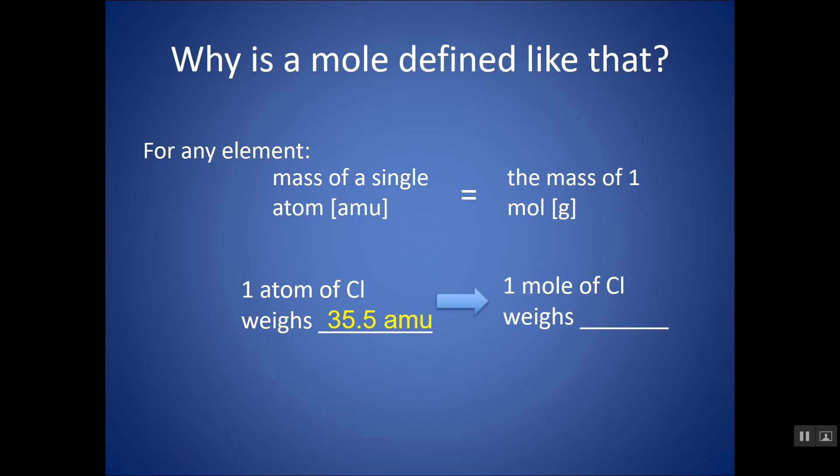If I scale up, one mole of Cl weighs 35.5 grams. Same number, but has a different unit because we're just scaling up, but we're able to use those same numbers due to the way that the mole is defined. And that mole contains 6.022 × 10^23 chlorine atoms.